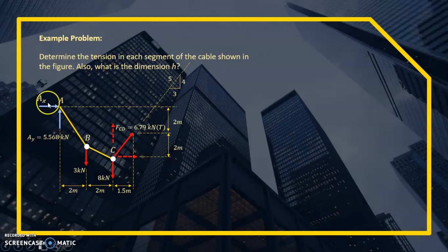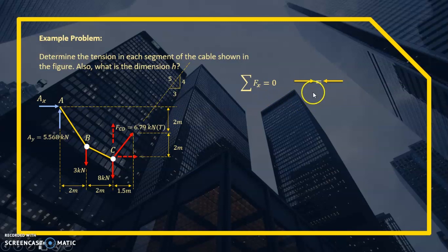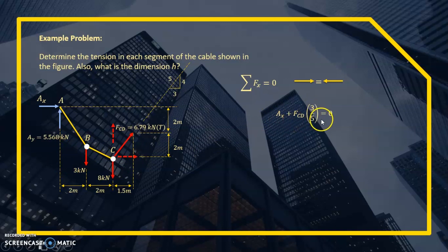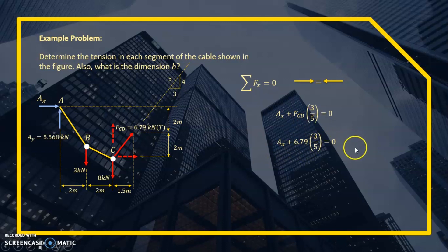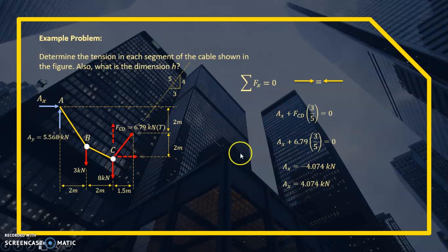Next, solving for Ax using summation of horizontal forces equals zero. Forces to the right: Ax plus horizontal component of FCD (FCD × 3/5) = 0. Substituting FCD = 6.79 kN: Ax = −4.074 kN. The negative sign means our assumed direction was wrong — Ax actually acts to the left instead of to the right.